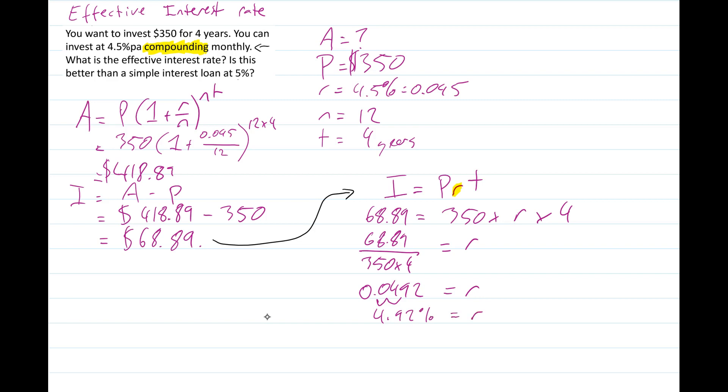So, is that better than a simple interest loan at 5%? Well, no. Because the effective interest rate is 4.92%. And when we're comparing it to 5%, that's not as good. So, therefore, the simple rate is better.